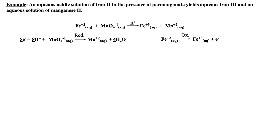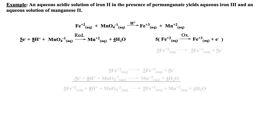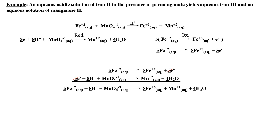Before the two half-reactions can be added, we need to ensure that electrons will cancel, which requires a distribution of five to the oxidation half-reaction. Now the two half-reactions can be added and the five electrons canceled. Checking charges and numbers of atoms on both sides of the equation indicate the redox reaction is balanced. Having these half-reactions grow is a much easier approach than rewriting the equation each time a step is performed.